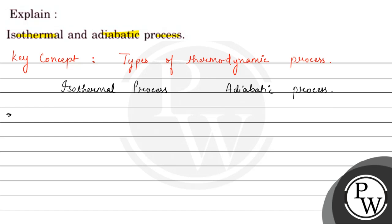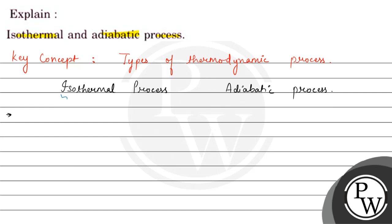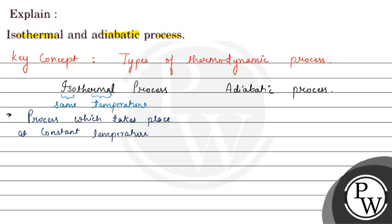Let's look at isothermal one by one. Isothermal means — 'iso' means same and 'thermal' stands for temperature. So the isothermal process is a process that occurs at constant temperature, which means delta T is equal to zero.